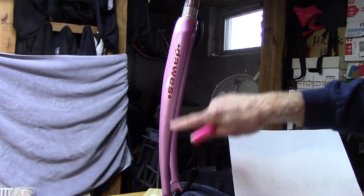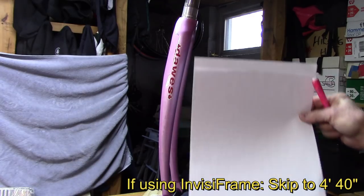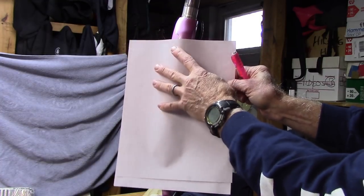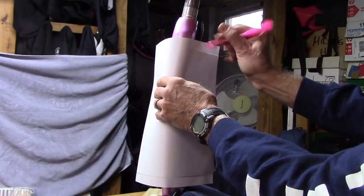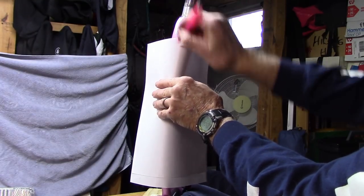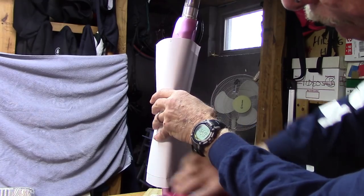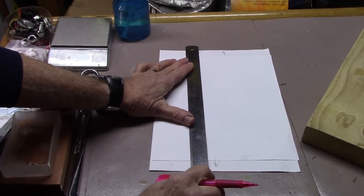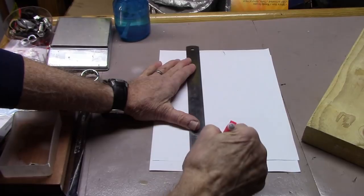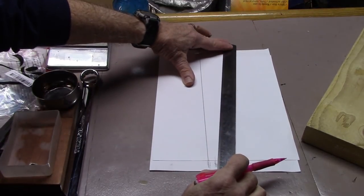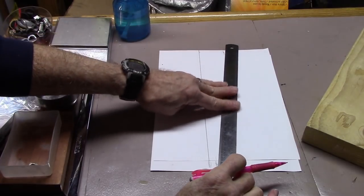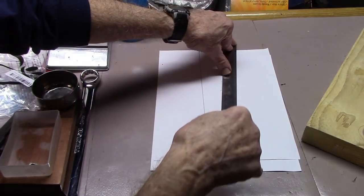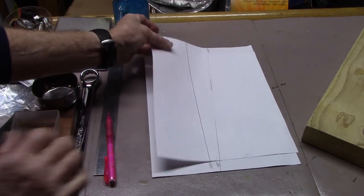We'll go ahead and make a pattern of the area that we want to cover. Remember, if your paper's not long enough, you can tape two pieces together. Put it up on the portion we're going to tape. We'll mark it. We'll go ahead and make our pattern. Cut this out.